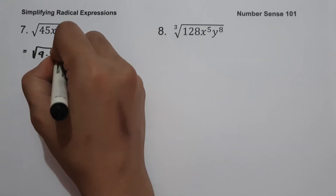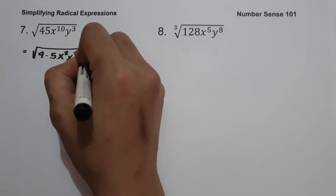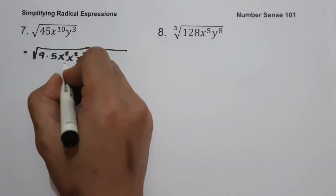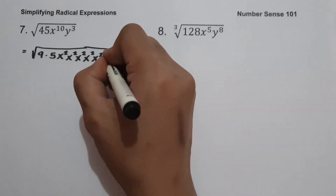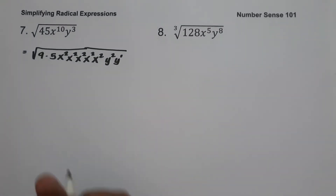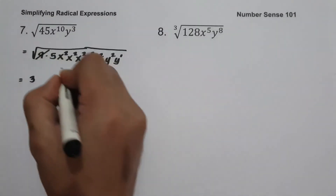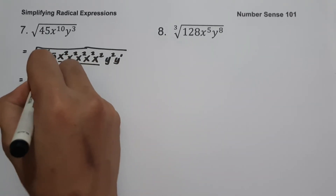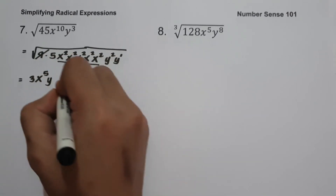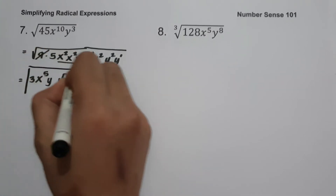We rewrite x raised to 10 as x squared five times — adding those exponents gives 10. For y cubed that is y squared and y raised to 1. The square root of 9 is 3, and since we have 5 x-squared terms we get x raised to 5. We have 1 y-squared term giving us y, and the remaining radical is square root of 5y. So our answer is 3x raised to 5, y, square root of 5y.